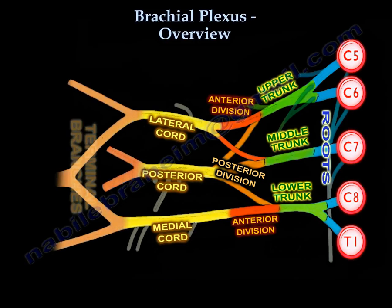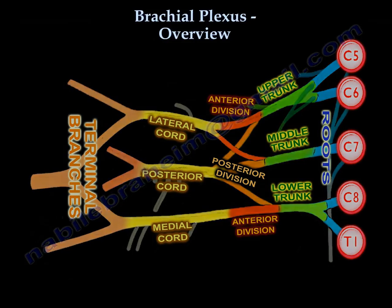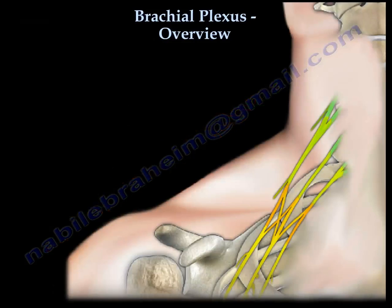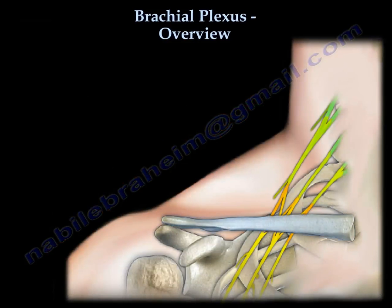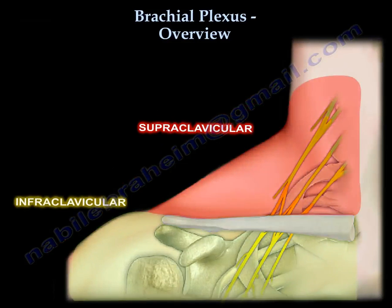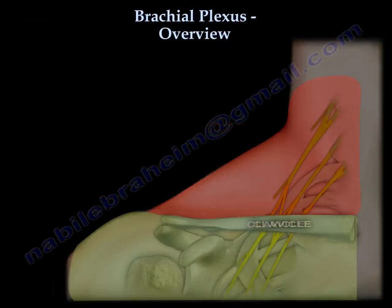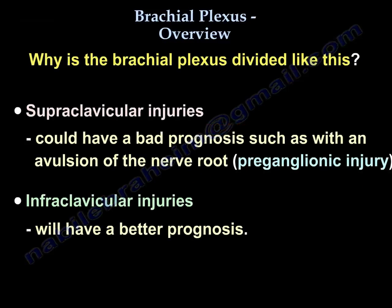The brachial plexus is divided into supraclavicular and infraclavicular parts, using the clavicle as a marker. Anything above the clavicle is supraclavicular; anything below is infraclavicular. Supraclavicular injuries have a bad prognosis and can involve avulsion from the root, while infraclavicular injuries have a better prognosis. You end with the branches.